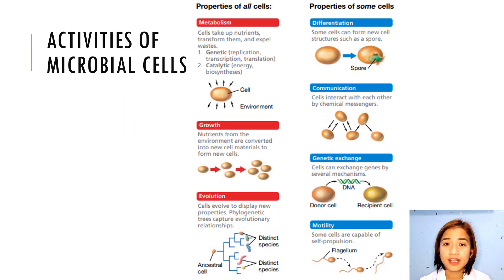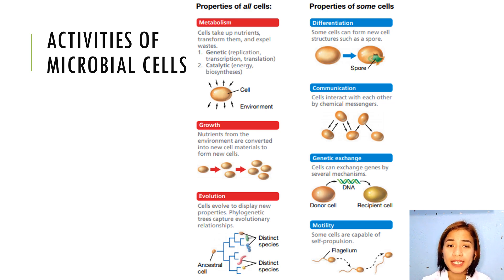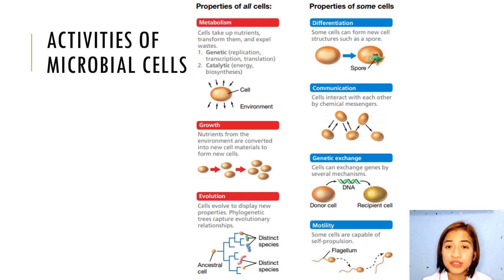All cells show some form of metabolism by taking up nutrients from the environment and transforming them into new cell materials and waste products. Transcription is the process by which the information on DNA is copied into an RNA molecule. And translation is the process whereby the information on an RNA molecule is used by a ribosome to synthesize a protein.